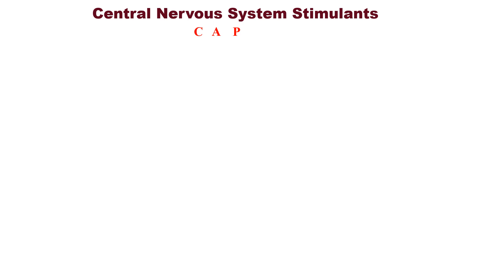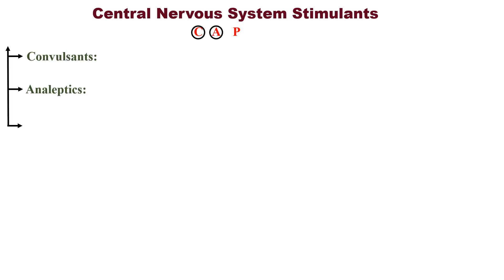Central nervous system stimulants are agents which stimulate the central nervous system and increase the performance and activity of an individual. To remember the classification of CNS stimulants, remember the mnemonic CAP: C for convulsants, A for analeptics, and P for psychostimulants.